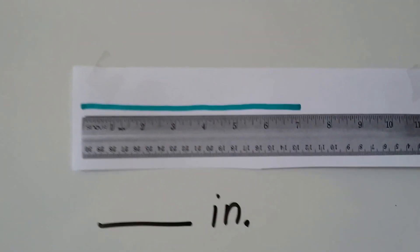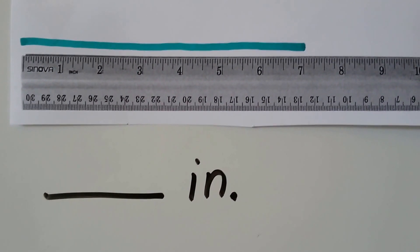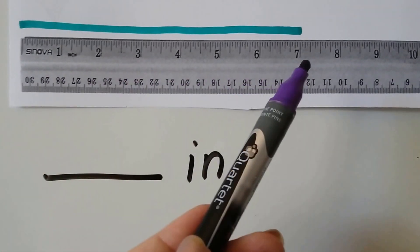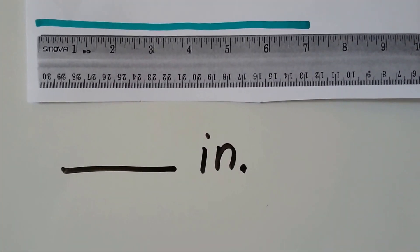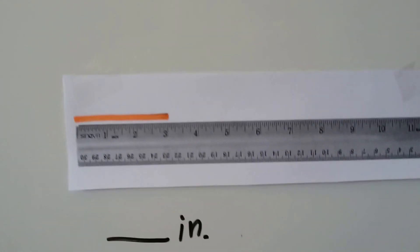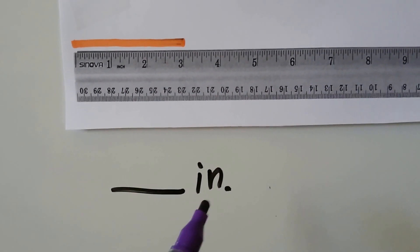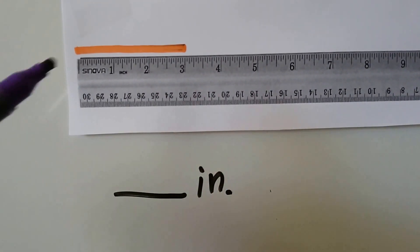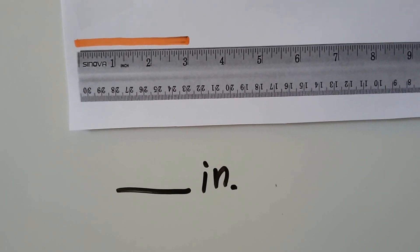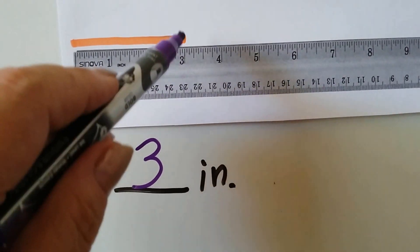How about this green one? Do you know about how many inches this green line is? Can you see the inches along the top here? If you said seven, you're right — good job! Now, remember, IN is the abbreviation for inch. How many inches is the orange line? If you said three, you're right — we can see the three right there where it lines up.